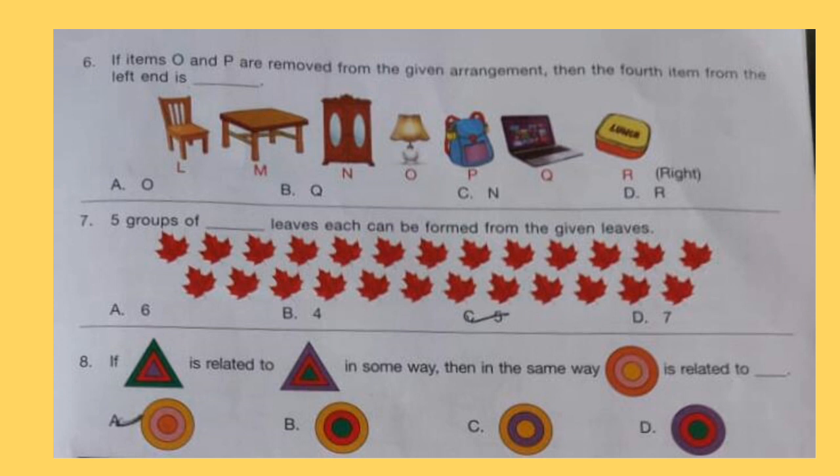Question 8: If green triangle is related to purple in some way, then in the same way, this circle is related to dash.